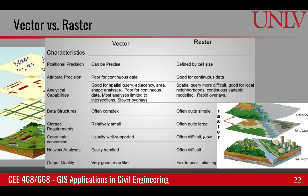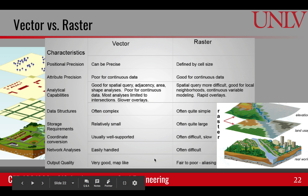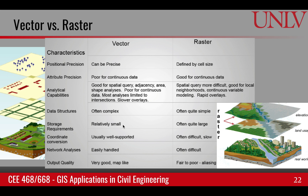As a homework, cover the other four categories and understand the advantages and disadvantages of vector and raster regarding storage requirements, coordinate conversion, network analysis, and output quality.